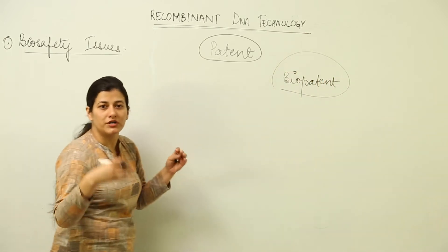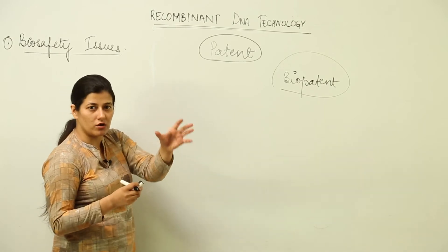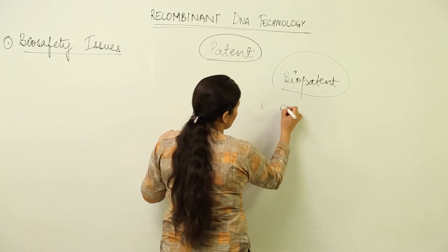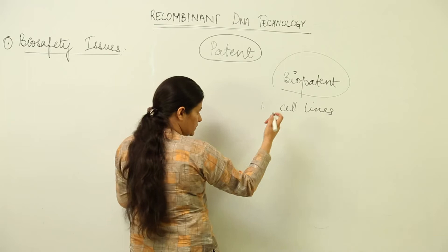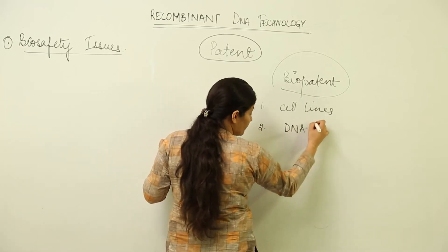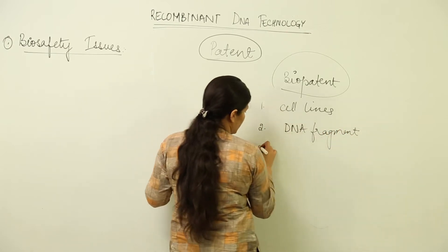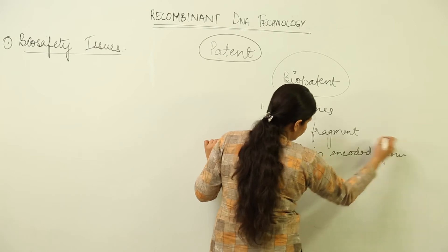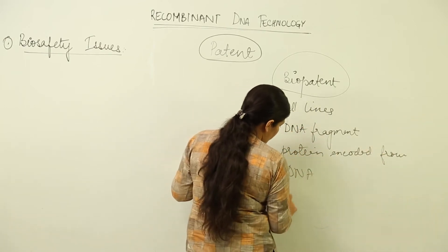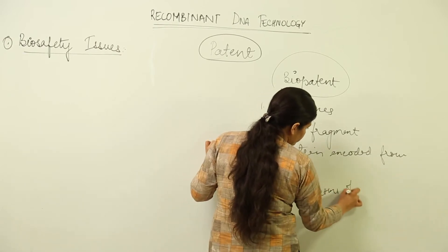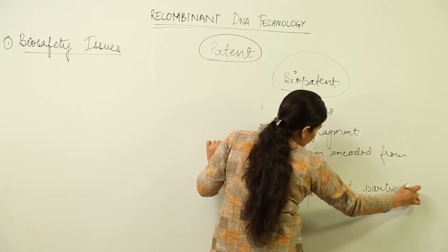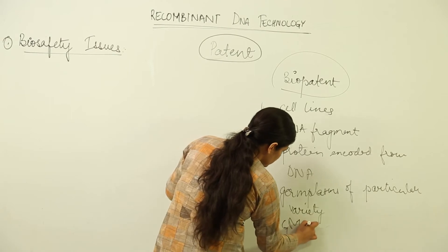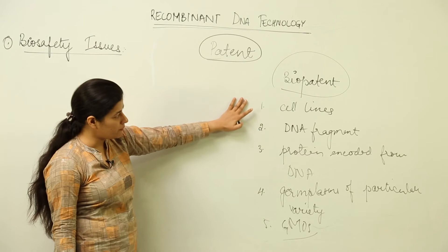Bio patent means awarding permission to carry out research in a particular field on a particular organism if someone has pioneered in finding that particular state. Things that can be covered under bio patent include: cell lines — particular lines of a given cell; DNA fragments; proteins encoded from DNA; the germplasm of a particular variety; and genetically modified organisms. These are the fields where bio patent can be applied.